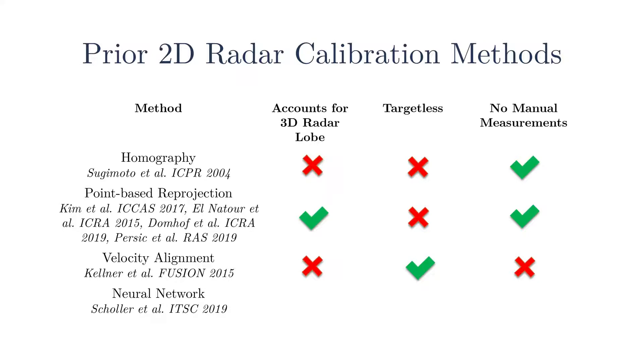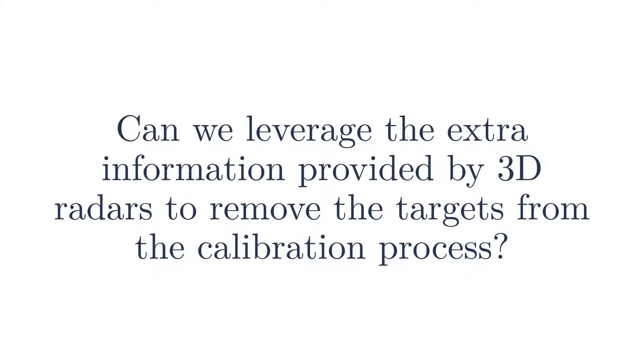Velocity alignment methods eliminate the need for a target, but require manual measurement of the translation between the two sensors and do not account for the 3D nature of radar measurements. Neural networks have been used to calibrate radars to cameras without specialized targets, but they require manual measurement of the translation between the sensors. This leads to the question: can we leverage the extra information provided by the 3D radars to remove the specialized targets from the calibration process?